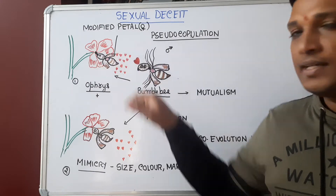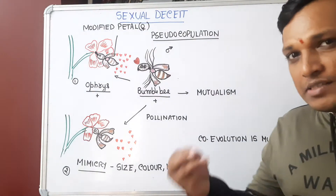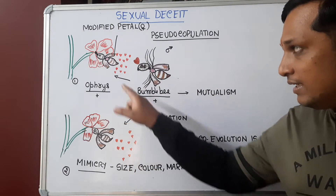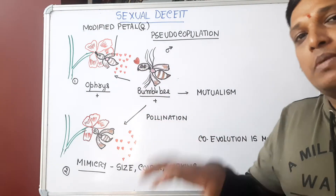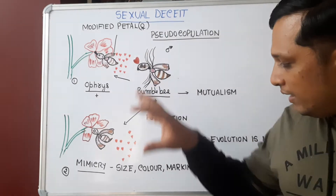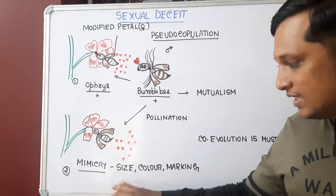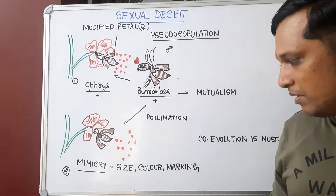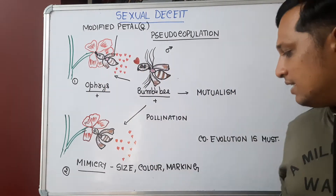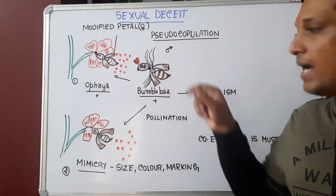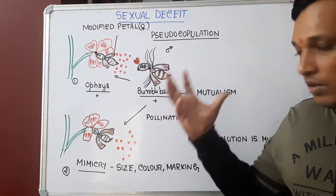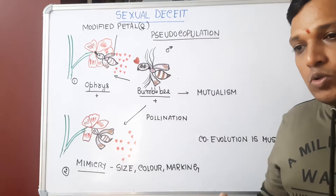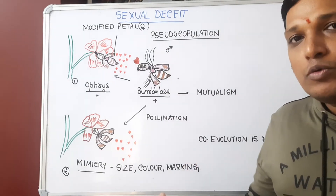Now, how does it attract the pollinator? It adapts a unique phenomenon — a sort of mimicry — whereby we can observe its flowers. All petals are similar, but it has modified one of its petals to resemble a female bumblebee in terms of size, color, and all marking patterns.